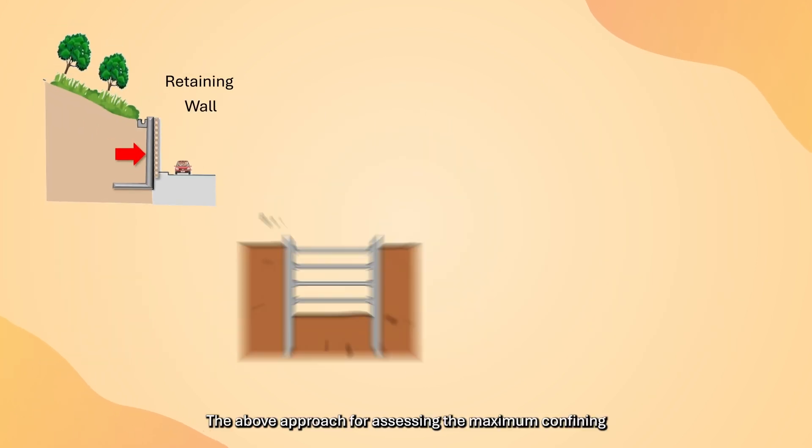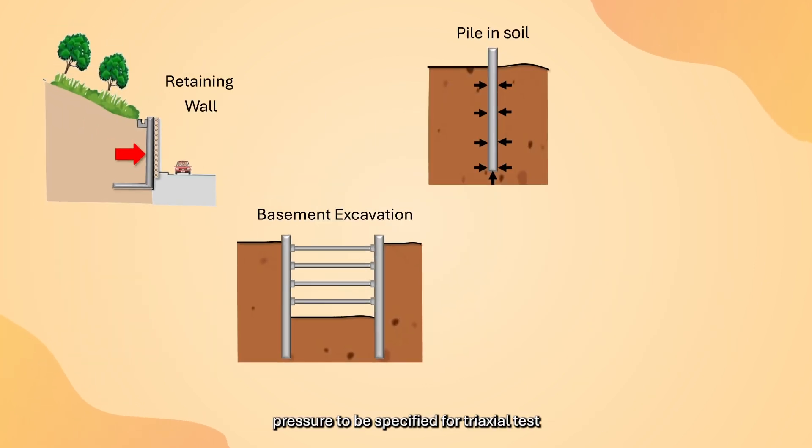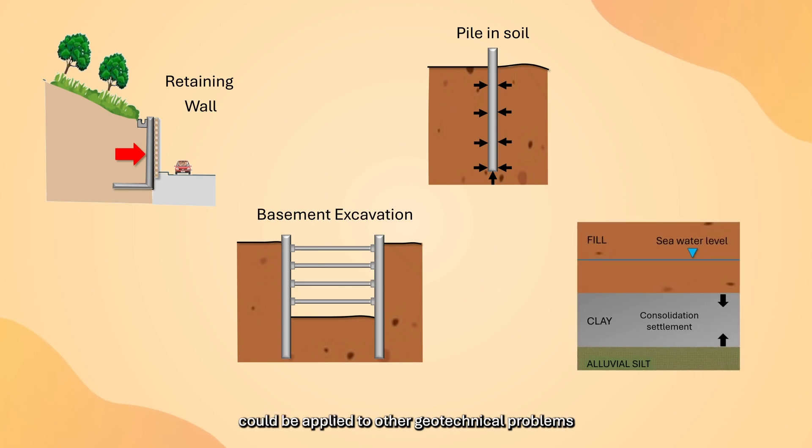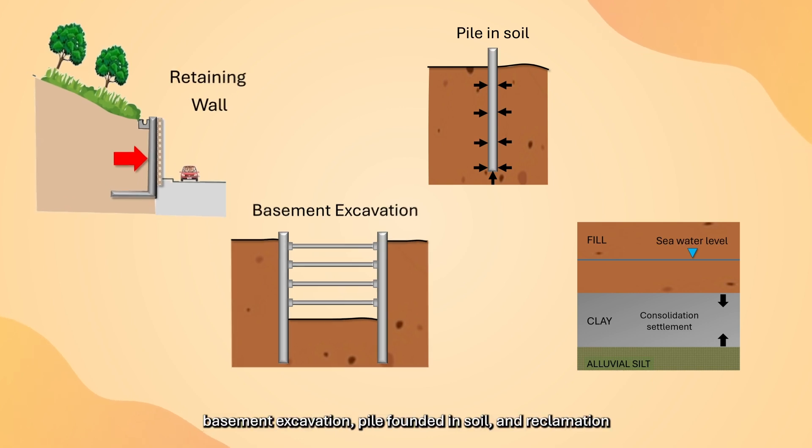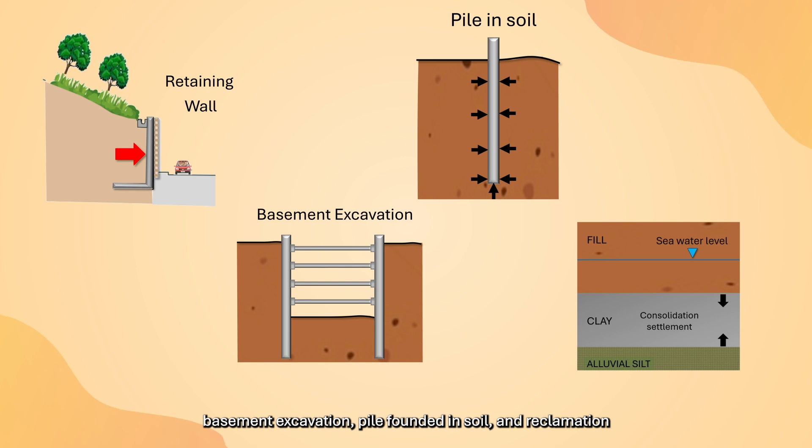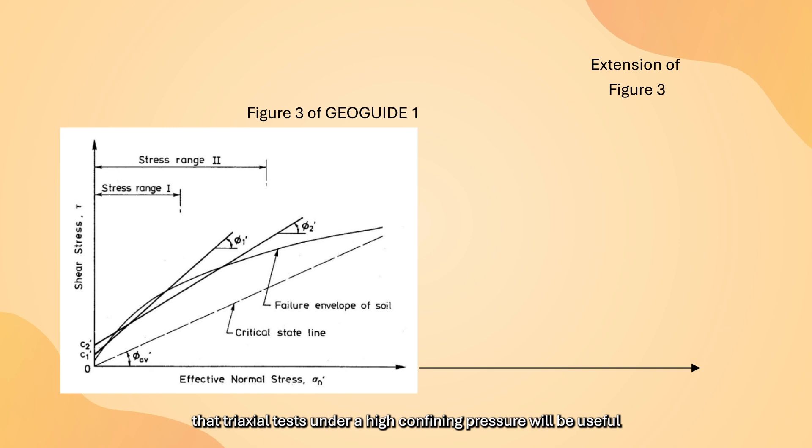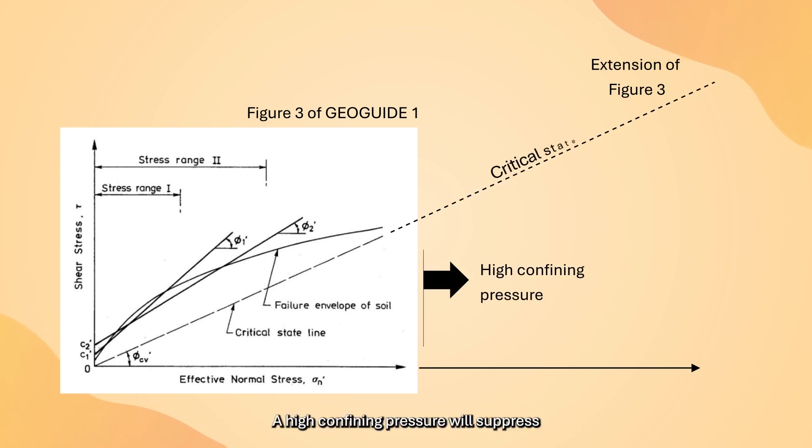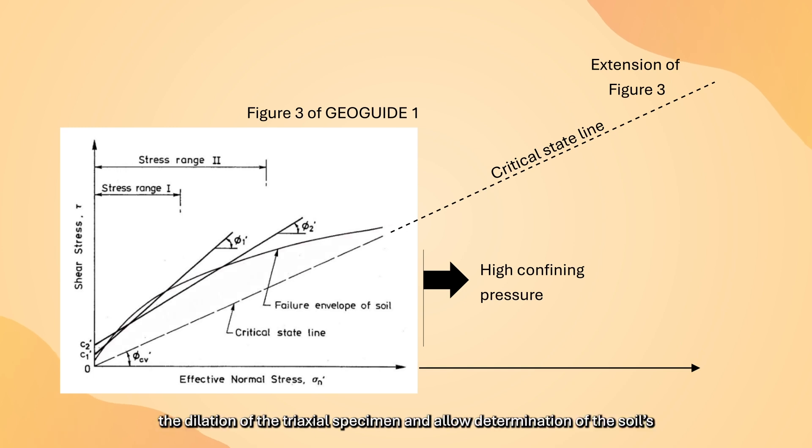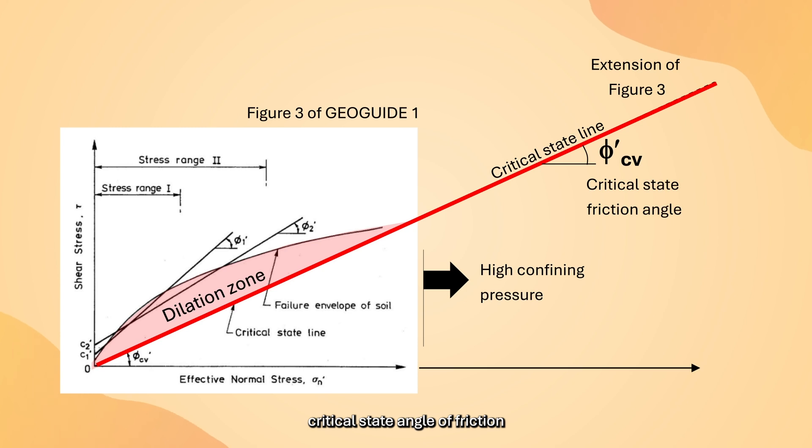The above approach for assessing the maximum confining pressure could be applied to other geotechnical problems in the estimation of appropriate stress range for the project. Examples include design of retaining wall, basement excavation, pile foundation in soil, and reclamation. It is worth noting that triaxial test under high confining pressure will be useful for determining the critical state strength of a soil, which is theoretically independent of stress level.